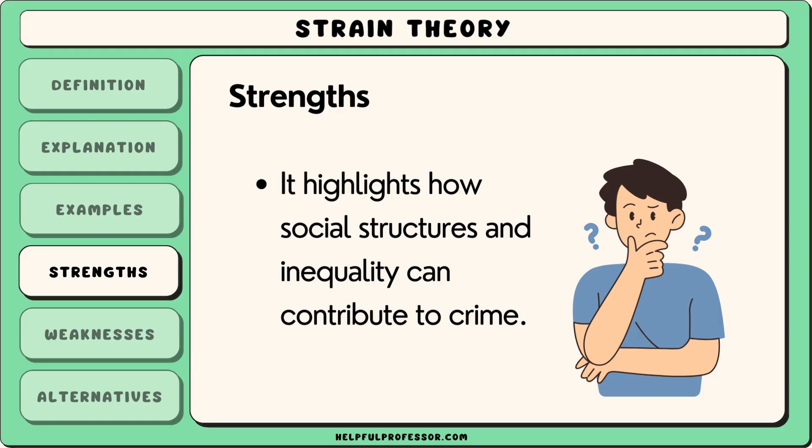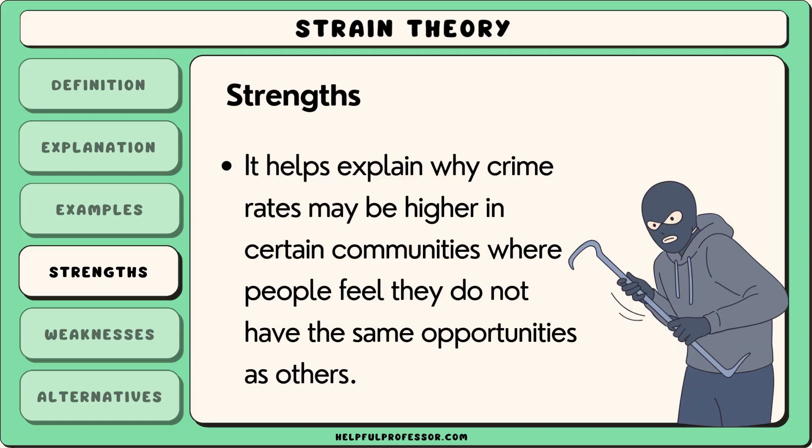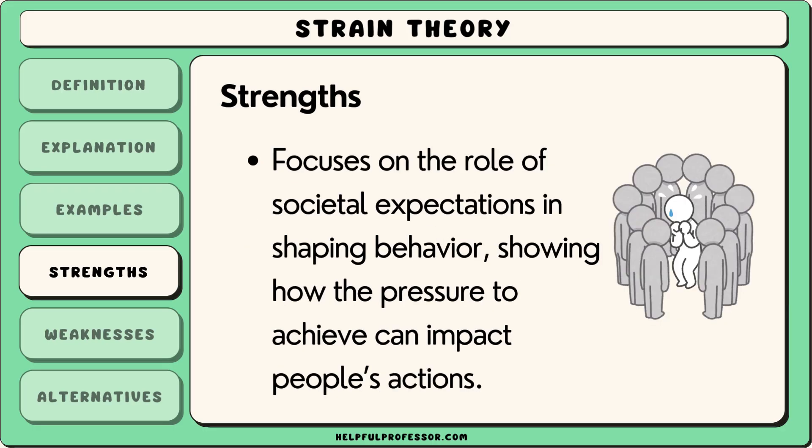One of the strengths of strain theory is that it highlights how social structures and inequality can contribute to crime. It helps explain why crime rates may be higher in certain communities where people feel they do not have the same opportunities as others. The theory also focuses on the role of societal expectations in shaping behaviour, showing how the pressure to achieve can impact people's actions.